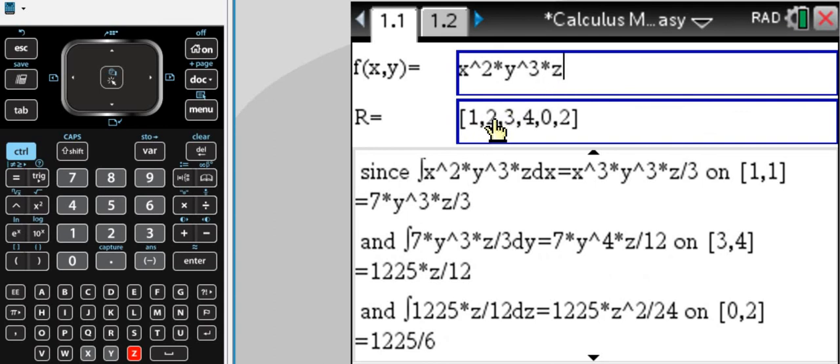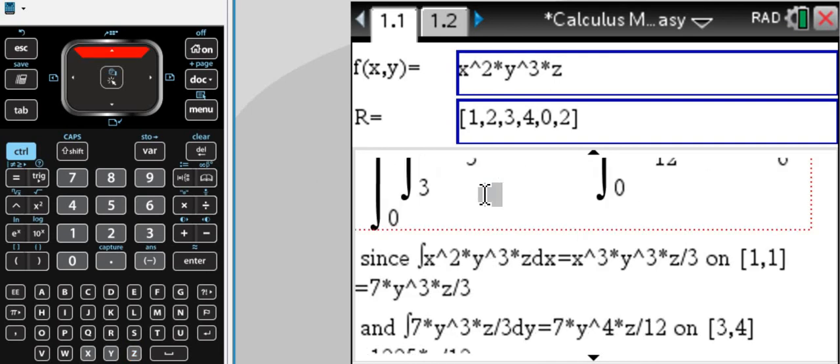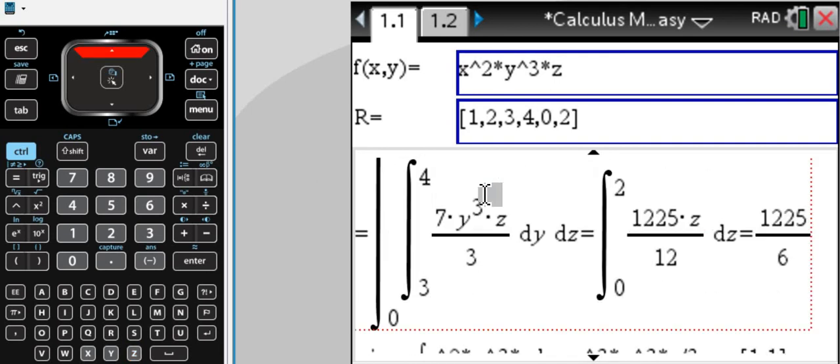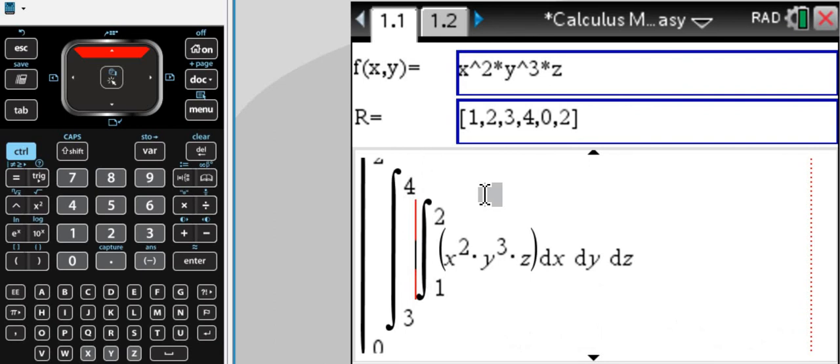And now the bounds here, 1 comma 2, if you scroll up, our triple integral here, 1 and 2 are the bounds for x, 3 and 4 are the bounds for y, and 0 and 2 are the bounds for z. So that's the only thing that you need to know when you enter the 6 bounds.